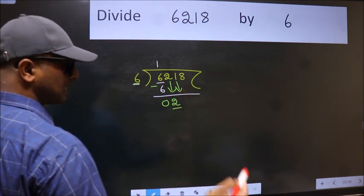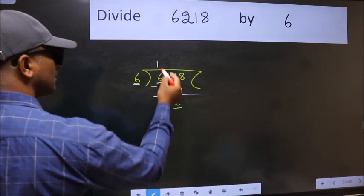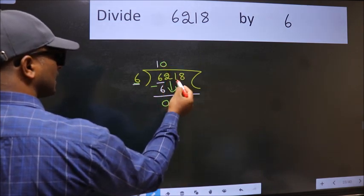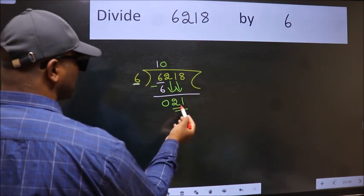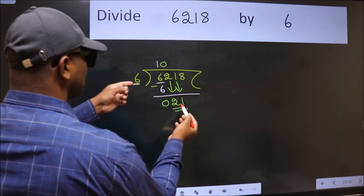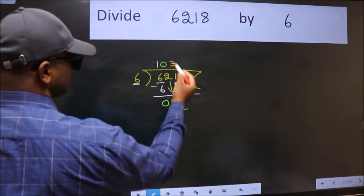And the rule to bring down second number is put 0 here. Then only we can bring this number down. So 21. A number close to 21 in 6 table is 6 times 3 is 18.